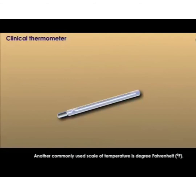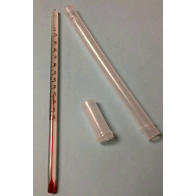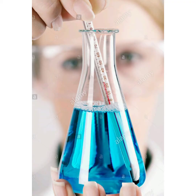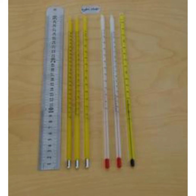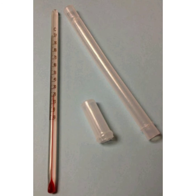Another commonly used scale of temperature is degrees Fahrenheit. Doctors' thermometers are also graduated in the Fahrenheit scale — 95 degrees to 110 degrees Fahrenheit. Another one is the laboratory thermometer, used to measure temperature in a science laboratory. These thermometers are designed for lab purposes such as checking boiling point and freezing point, and have markings from minus 10 degrees centigrade to 110 degrees centigrade. The clinical thermometer is for measuring human body temperature, while the lab thermometer is for measuring temperatures other than human body temperature.